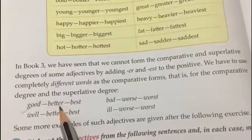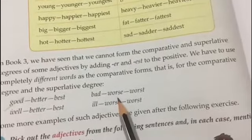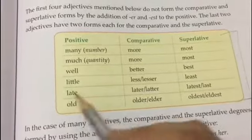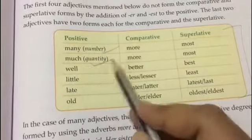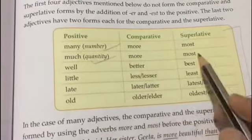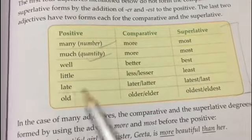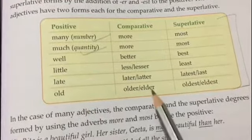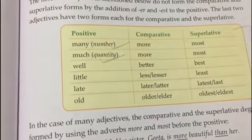There are some exceptions where you do not simply add -est. These include: good, better, best; well, better, best; bad, worse, worst; ill, worse, worst; many, more, most; much, more, most; little, less/lesser, least; late, later, latest/last; old, older/elder, oldest/eldest.